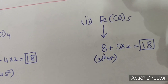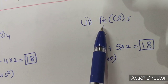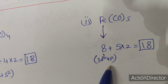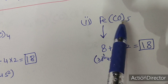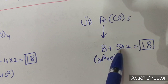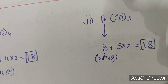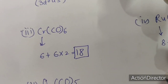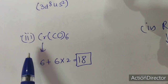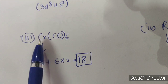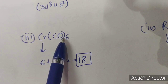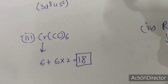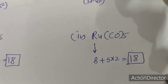For FeCO5, iron's configuration is 3d6 4s2, giving 8 valence electrons, and 5 carbonyls donate 10 electrons — total is 18. For CrCO6, chromium's valence shell configuration is 3d5 4s1, giving 6 electrons, and 6 carbonyls donate 12 electrons — total is 18. Both are following the 18-electron rule.